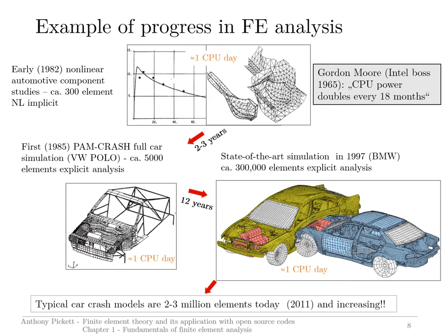I wanted to give another view on the evolution of the finite element method over about 30 years — an area I've been involved in. At the top, a finite element structure represents part of the front of a car — the mainframe connected to the firewall and part of the floor. In 1982, this analysis only had 300 shell elements; it was a highly non-linear implicit analysis with plasticity and buckling occurring, taking about one computation day to complete.